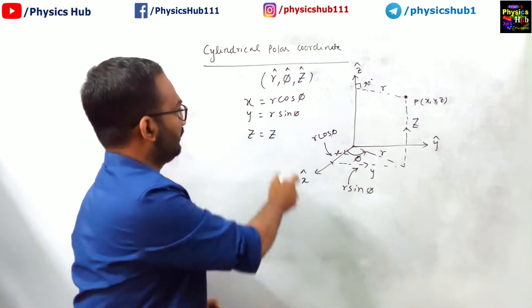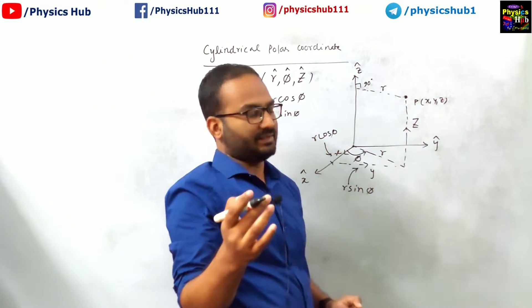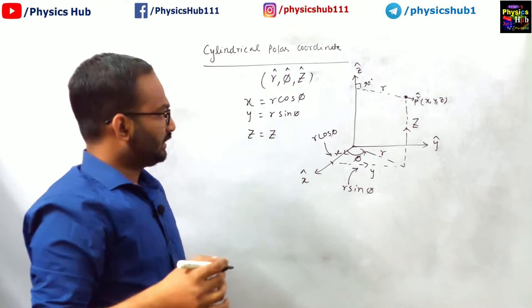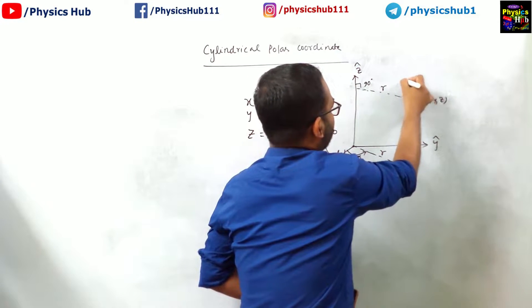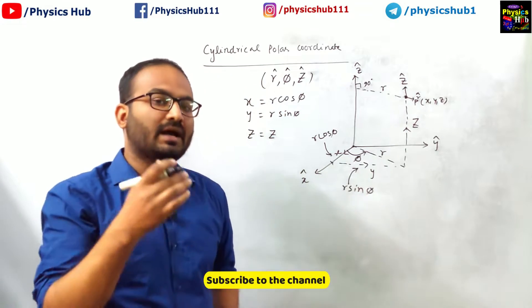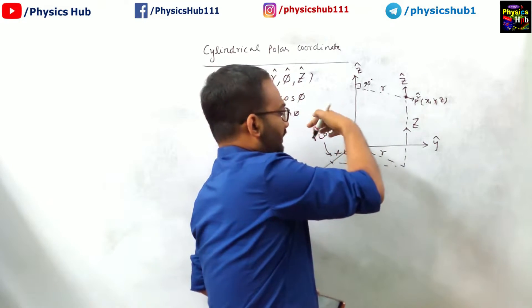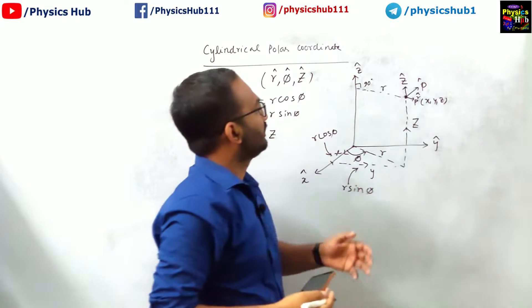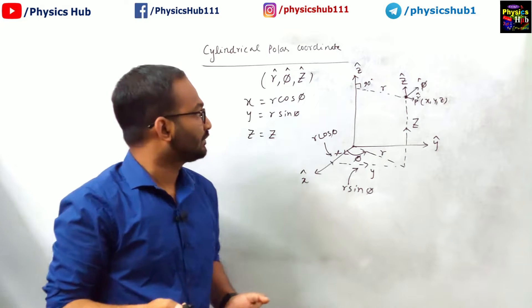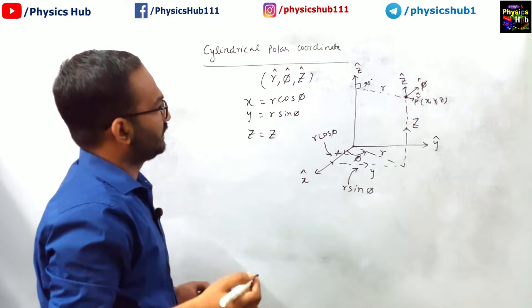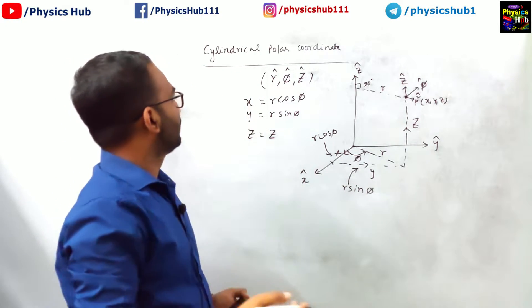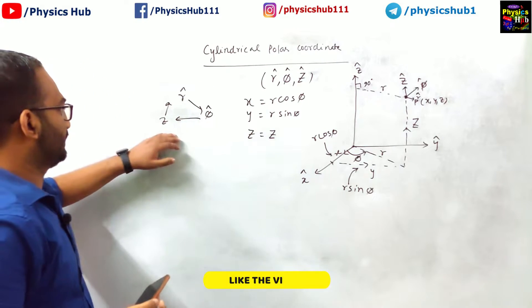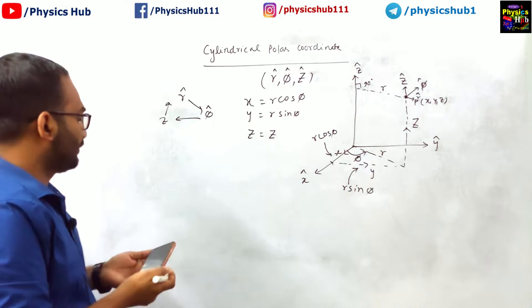The direction of r cap is perpendicular to z cap, with 90 degrees between them. The direction of phi cap is along the curved direction as phi increases. The angles between r cap, phi cap and z cap are all 90 degrees. The cross product relations are: r cap cross phi cap gives z cap, phi cap cross z cap gives r cap, and z cap cross r cap gives phi cap.